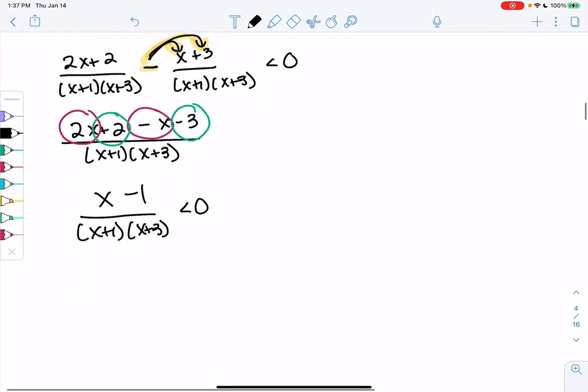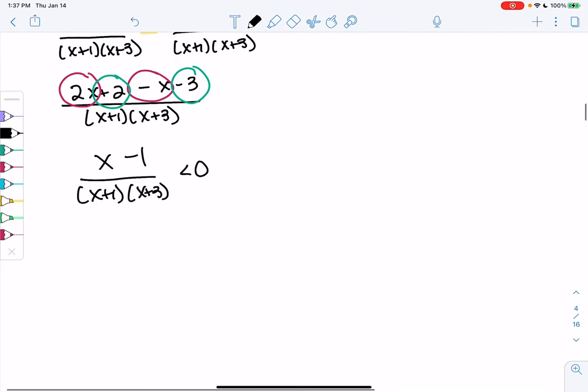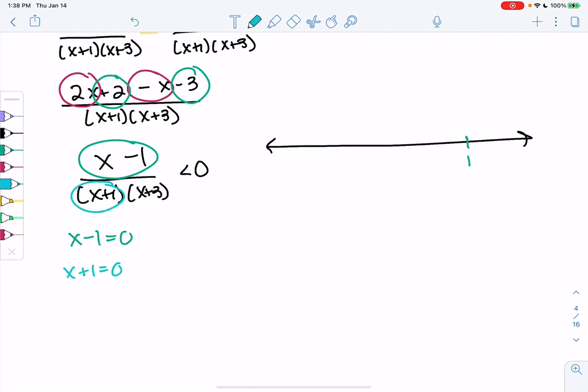So we can find those intervals, those endpoints and intervals. The numerator gives me a 1. x minus 1 equals 0 gives me a 1. x plus 1 equals 0 gives me a negative 1. And since it's in the denominator, x can't be negative 1, because the denominator can't be 0. Even if endpoints are included, anything from the denominator is not.